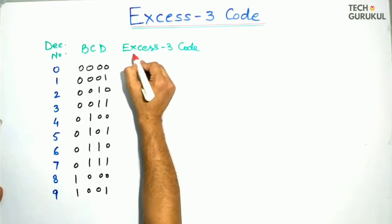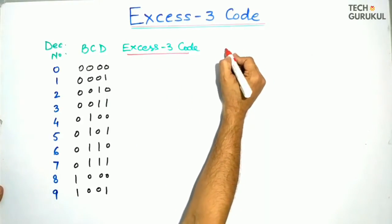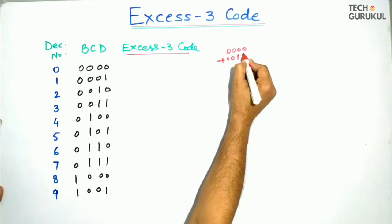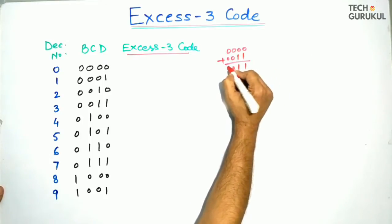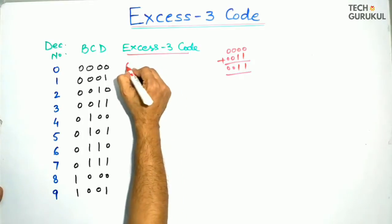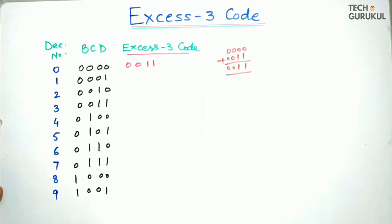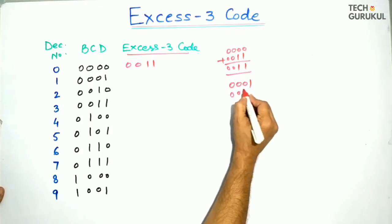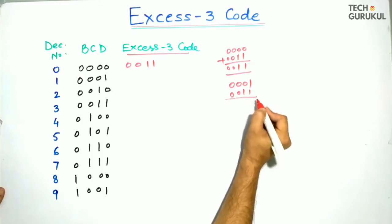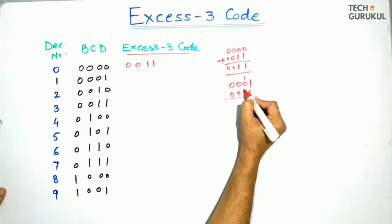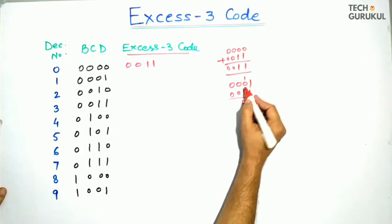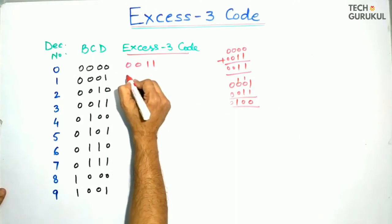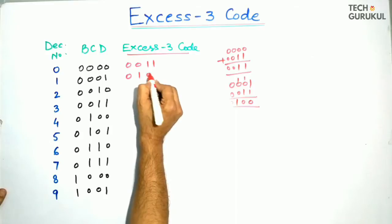For XS3 code of 0, we add 3 (which is 0011) to 0000, giving us 0011. So the XS3 code for 0 is 0011. For decimal 1, we add 0011 to 0001. 1 plus 1 is 0 carry 1, carry 1 plus 1 is 0 carry 1, so the XS3 code for 1 is 0100.